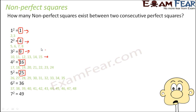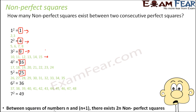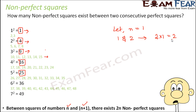Do you think a fixed number of non-perfect squares exist between 2 consecutive perfect squares such as 1 and 4, 4 and 9, or 9 and 16? From this observation, you can see that between the squares of numbers n and n+1 — that is, 2 consecutive perfect squares — there exist 2n non-perfect squares. For example, let n = 1. Between 1² and 2² there should be 2×1 = 2 non-perfect squares. And indeed, 2 and 3 are the 2 non-perfect squares between them. So this formula holds true.